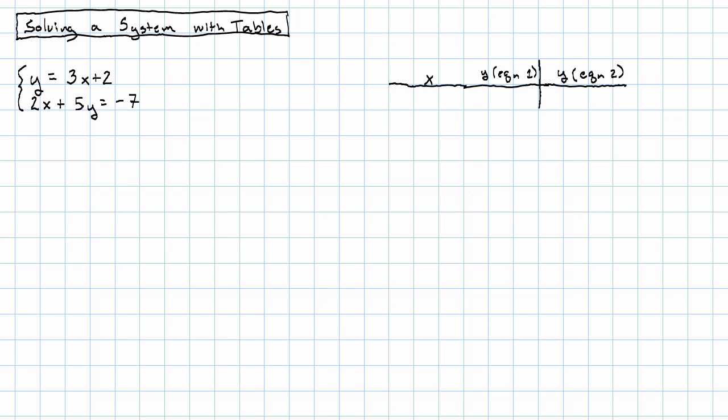So in this table, we're going to see solutions to the first equation and solutions to the second equation. We're looking for pairs of numbers that work in both equations. That is, we're looking for a row where both of the y's are the same.